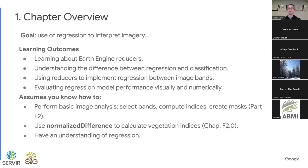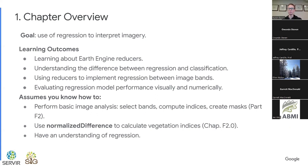So a quick overview of the chapter. Our goal today is to learn how to use regression to interpret imagery in Google Earth Engine. To do this, we're going to be learning about Earth Engine reducers, understanding the difference between regression and classification, using reducers to implement regression between image bands, and then evaluating regression model performance, both visually and numerically.